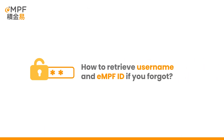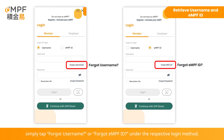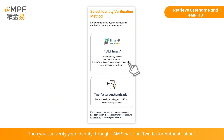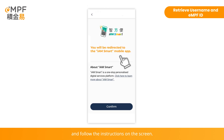How to retrieve your username and EMPF ID if you forgot. On the EMPF login page, simply tap 'Forgot Username' or 'Forgot EMPF ID' under the respective login method. Then, you can verify your identity through iAM Smart or two-factor authentication. You can log in to the iAM Smart mobile app and follow the instructions on the screen.